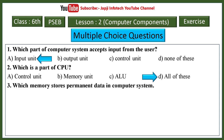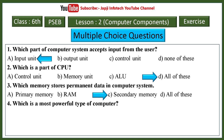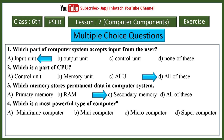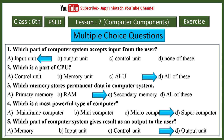Third: which memory stores permanent data in a computer system? Options: primary memory, RAM, secondary memory, all of these. Right answer: secondary memory. Fourth: which is the most powerful type of computer? Options: mainframe, mini, micro, supercomputer. Right answer: supercomputer. Fifth: which part of a computer system gives result as output to the user? Options: memory, input unit, control unit, output unit. Right answer: output unit.